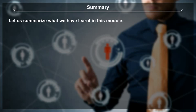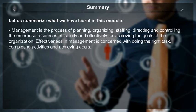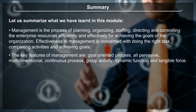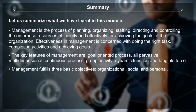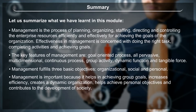Summary: Management is the process of planning, organizing, staffing, directing and controlling enterprise resources efficiently and effectively for achieving organizational goals. Effectiveness in management is concerned with doing the right task, completing activities and achieving goals. The key features of management are: goal-oriented process, all-pervasive, multi-dimensional, continuous process, group activity, dynamic function and intangible force. Management fulfills three basic objectives: organizational, social and personal.